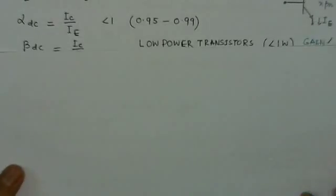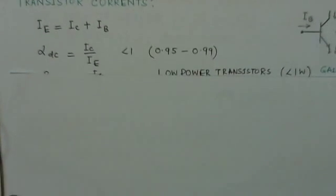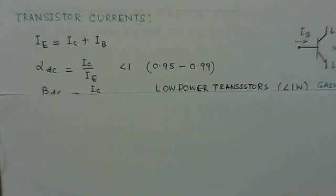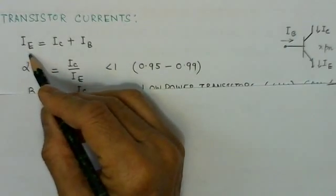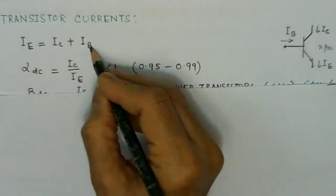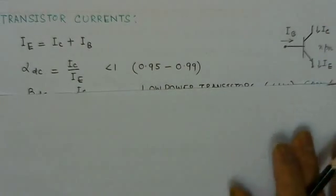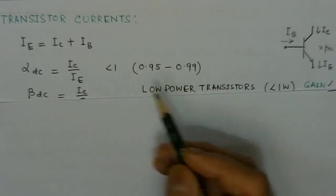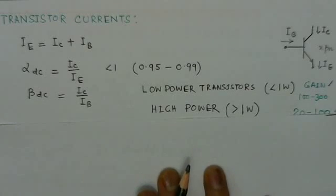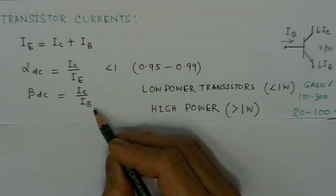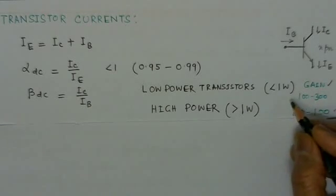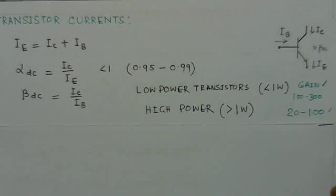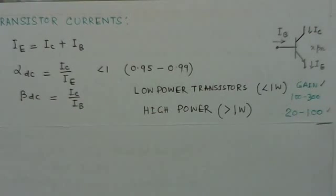Now we see the transistor currents. Here, as we have noticed, the emitter is the total current which consists of collector current and the base current. The DC value of the current gain is IC over IE for the common base circuit. And beta DC is for the current gain for the common emitter circuits. Most of the low power transistors which have dissipation less than a watt have a gain of from 100 to 300.